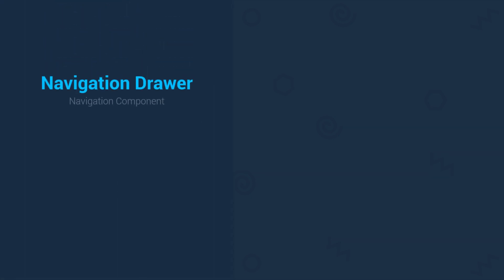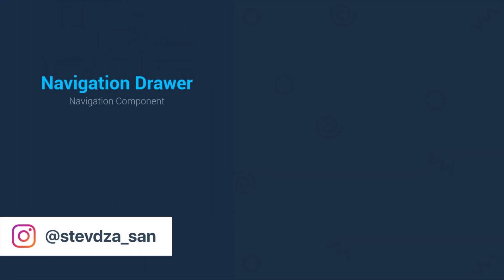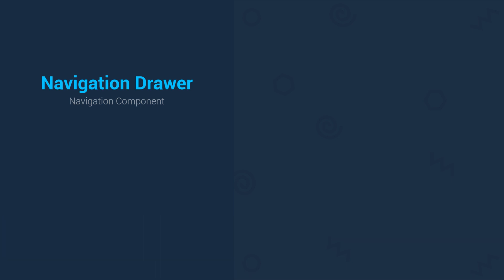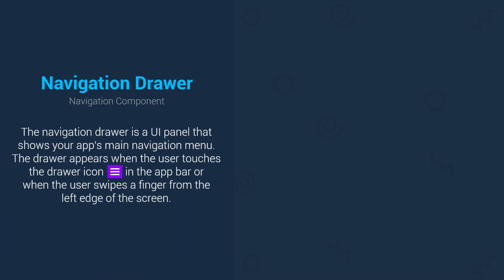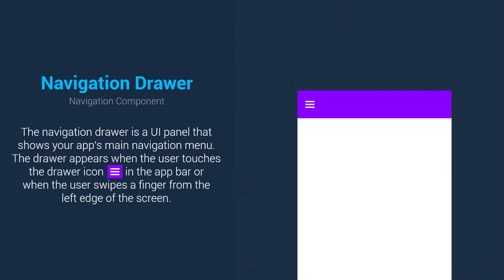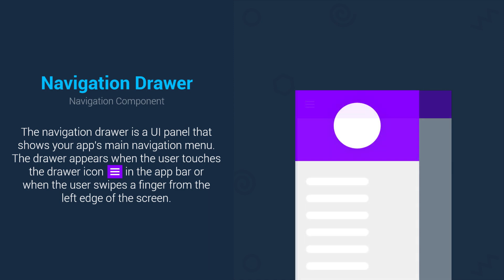Hello there and welcome back to my new video. In this video I want to show you how to use a navigation drawer with a navigation component. If you're not familiar with a navigation drawer, it's basically a UI panel that shows your application's navigation menu. The drawer appears when the user touches the drawer icon in the application bar or when the user swipes a finger from the left edge of the screen.